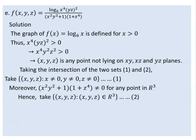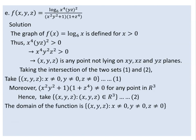We have to consider the intersection of the two sets — set one and set two. The domain of the function is the set containing points xyz such that x is different from zero, y is different from zero, and z is different from zero, meaning no point can lie on the yz plane or have any coordinate equal to zero.